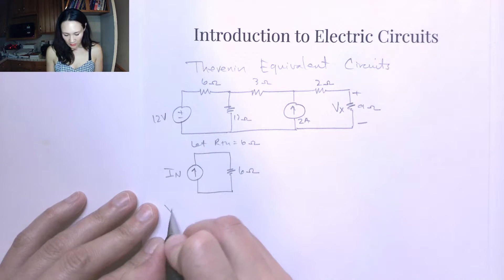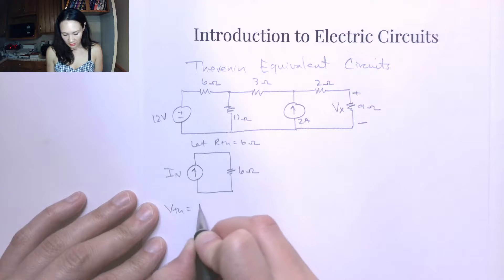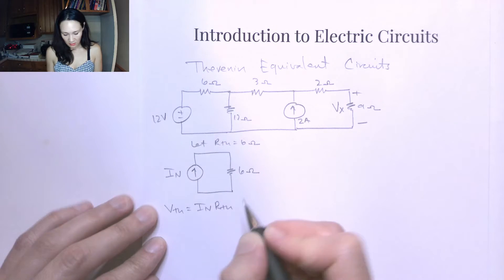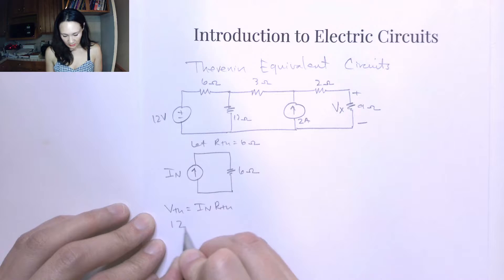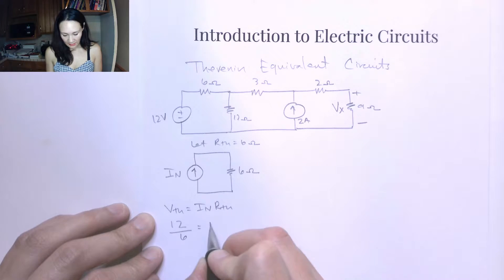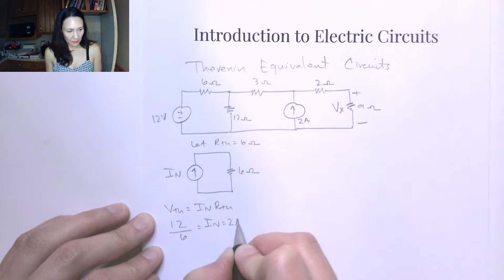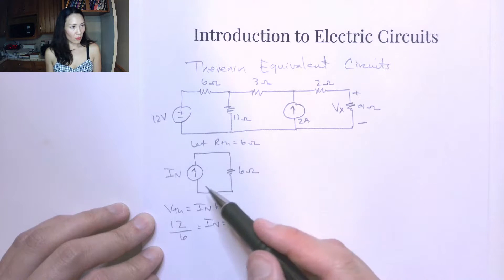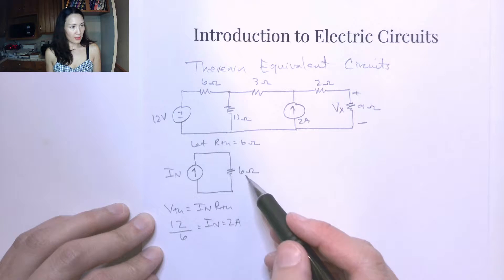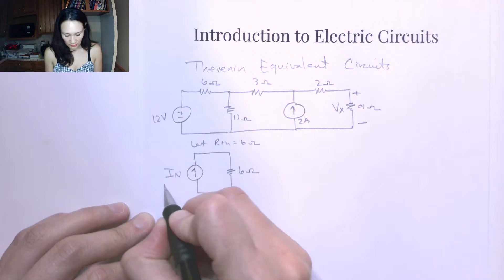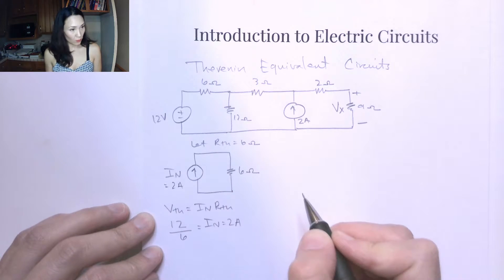By Ohm's law, V-Thevenin equals I-Norton times R-Thevenin. So if my V-Thevenin is 12, dividing that by 6 gives me my I-Norton, which is 2 amps. So I can replace the voltage source and series resistor with this equivalent: a 6-ohm resistor in parallel with a 2-amp current source.